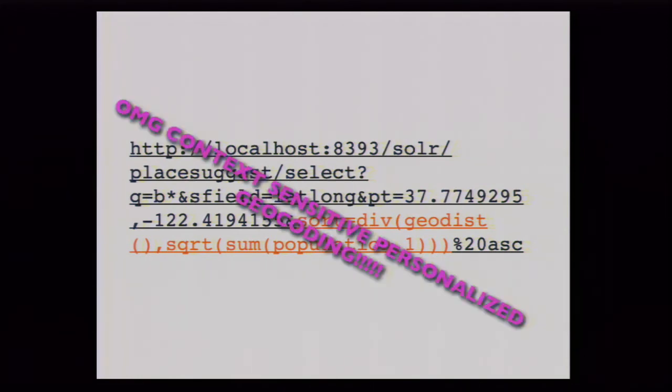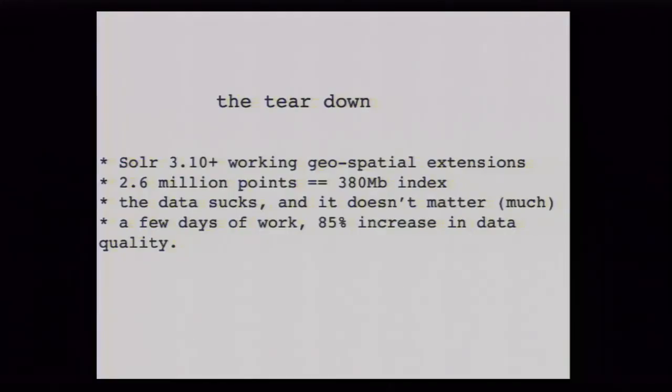Geosyndex — personalized geocoding. Everybody has been talking about context and personalization, and they're really important, and they're also really easy now — so you should be doing it. Quick teardown: Solr 3.0 with working geospatial indexes, 2.6 million data points, 300-megabyte index. You can run it on your iPhone and it will go slow; on a decent server it will go fast. The data actually sucks, but it doesn't matter that much — we're seeing an 85% increase in data quality from a free dataset and a couple days of work.